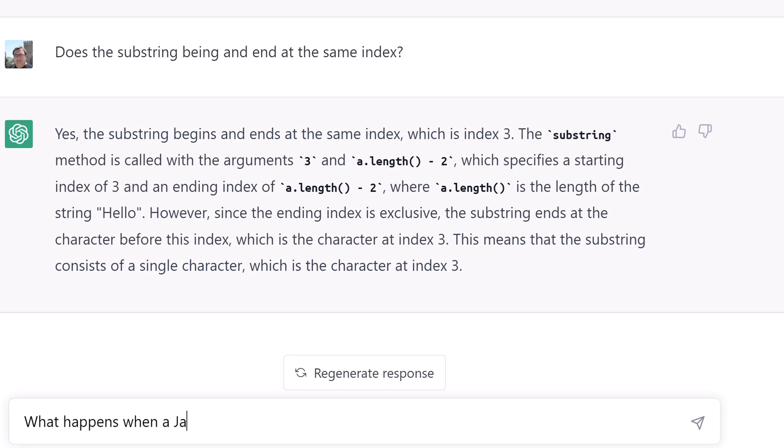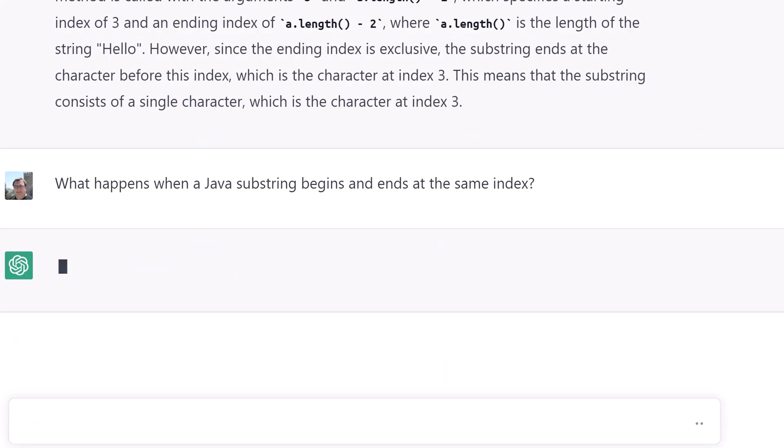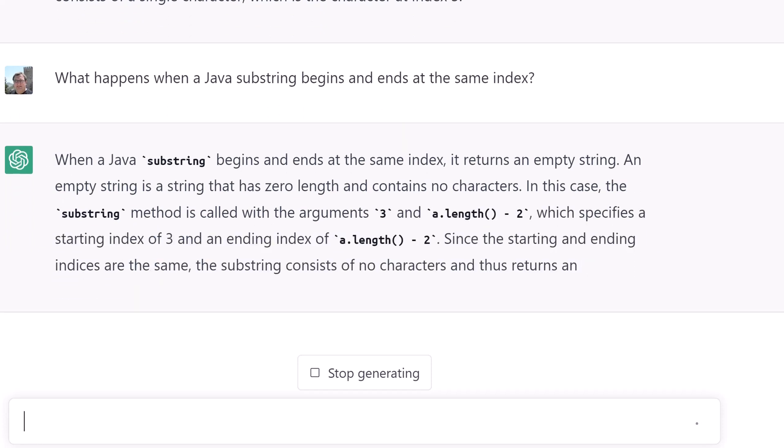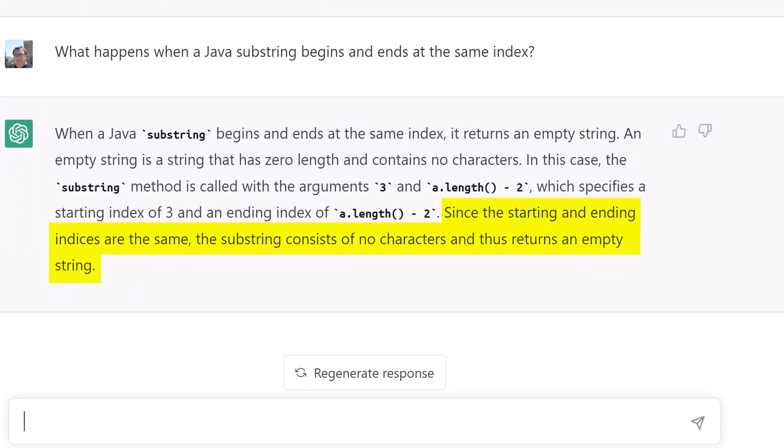Let's ask ChatGPT what happens when a substring starts and ends at the same index. Okay, it realizes that such a situation would return an empty string, but can't apply that knowledge to the piece of code we're talking about.